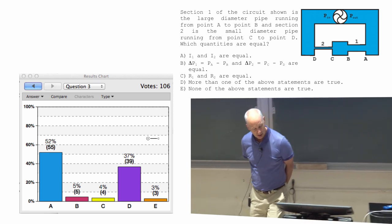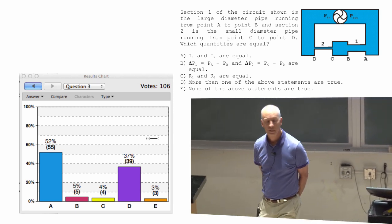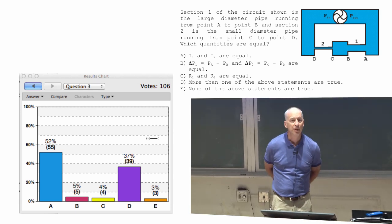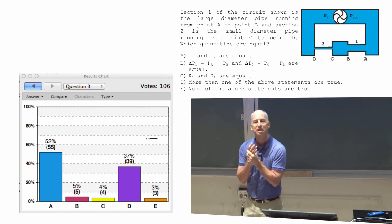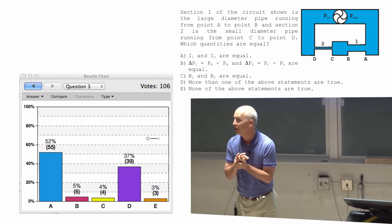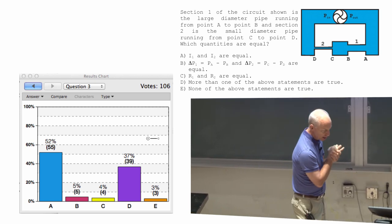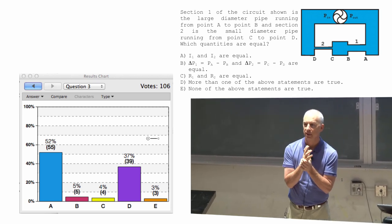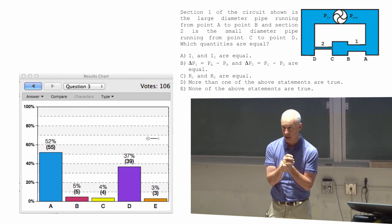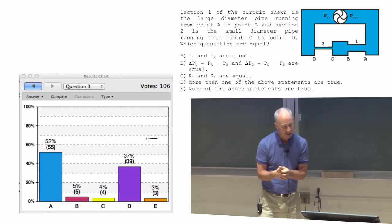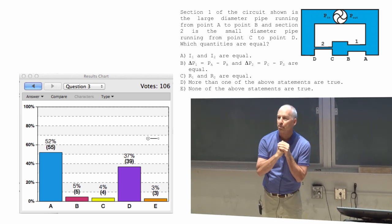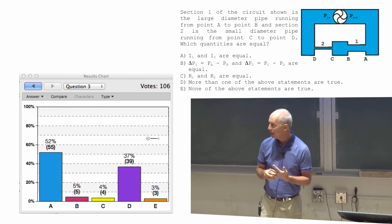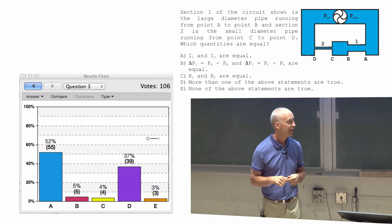Let's look at section one. Will there be a pressure drop? First of all, let me go back. Is there a gravitational potential energy change? No. Is there a change in speed along one? No. So, no kinetic energy change, no gravitational potential energy change. Is there a pump between points A and B? No. So, all we have left is pressure change and thermal energy change.